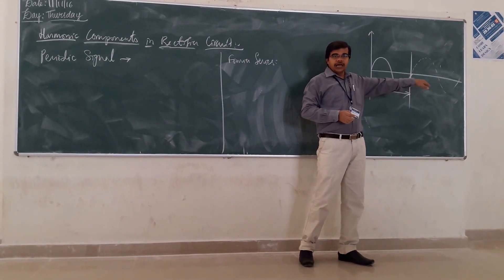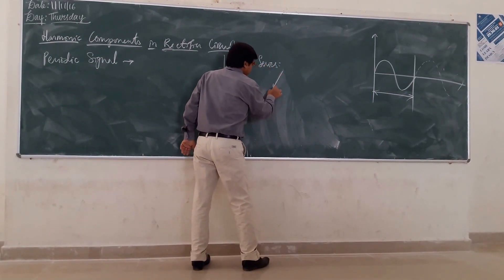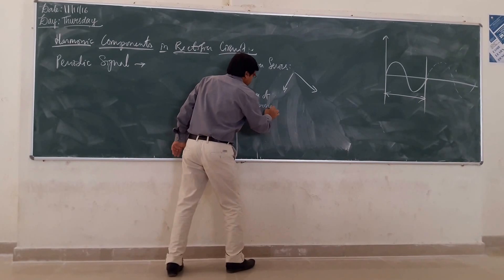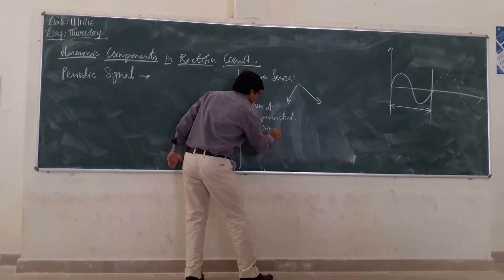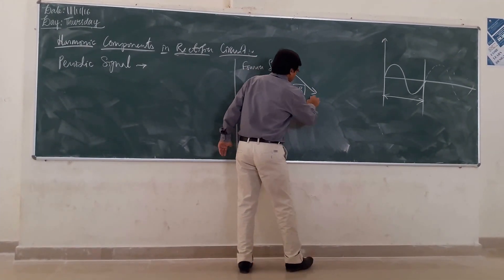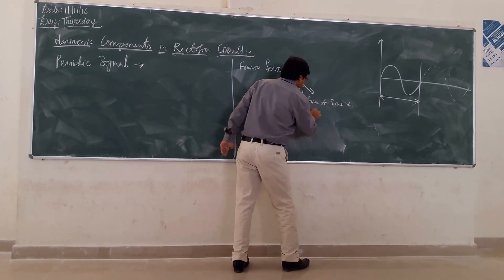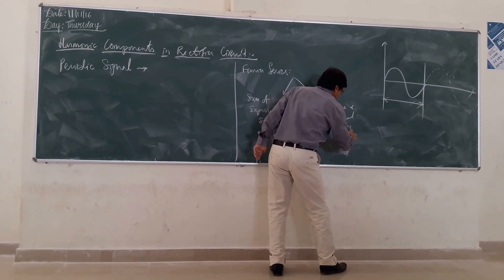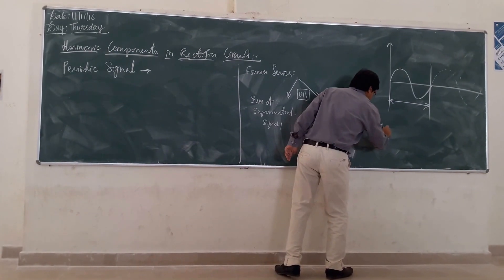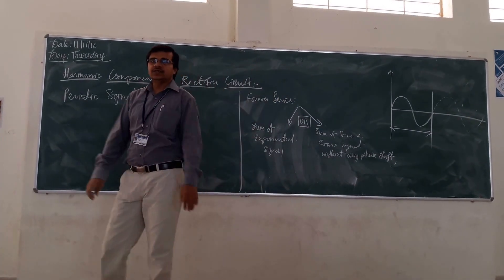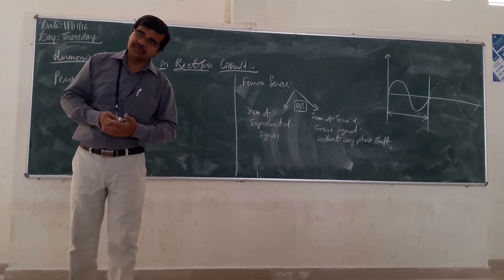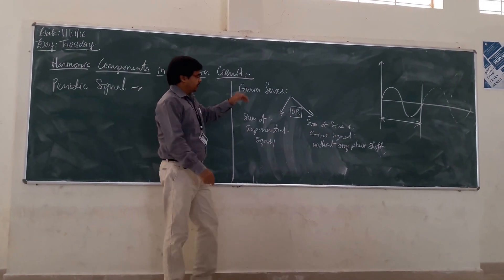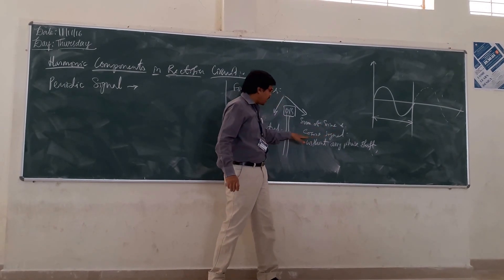If you are having a periodic signal, this periodic signal we can decompose into a sum of exponential signals or a sum of sine and cosine signals without any phase shift. So any signal, whether it is a square wave signal, a triangle wave signal, or a sawtooth wave signal, if it is periodic in nature, we can represent each signal as a vector with sum of sine and cosine signals.